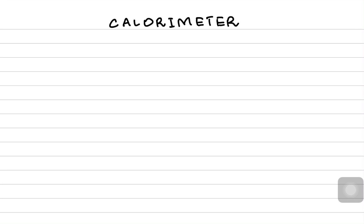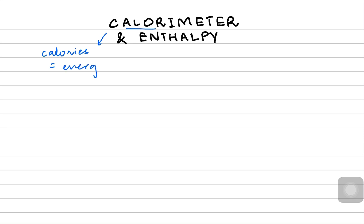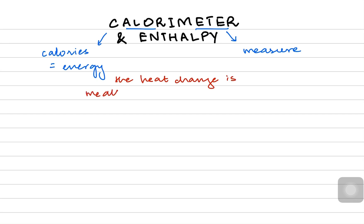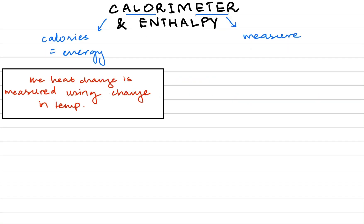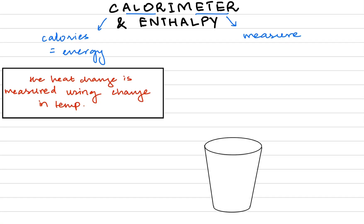Welcome back to another video by Cam Room 5. In today's video we are going to be talking about calorimetry and we're going to connect the concept of calorimetry with enthalpy. We have been talking about enthalpy for quite some videos. In calorimetry, 'calorie' means calories which means energy, and 'meter' means we are going to measure something. In a calorimeter, the heat change is measured using the change in temperature, and we connect it to enthalpy.